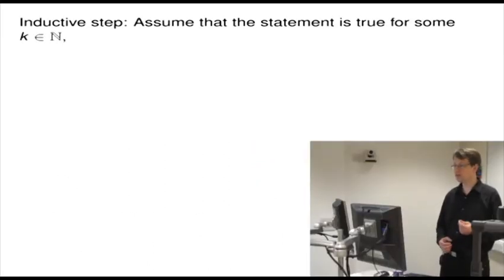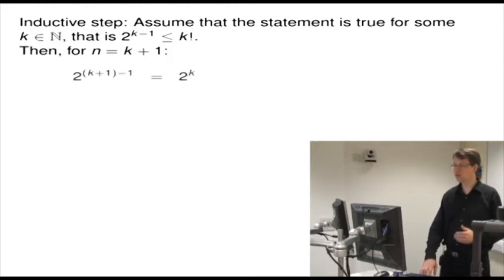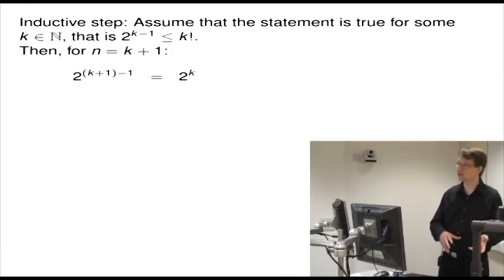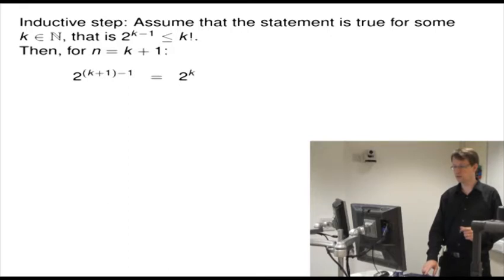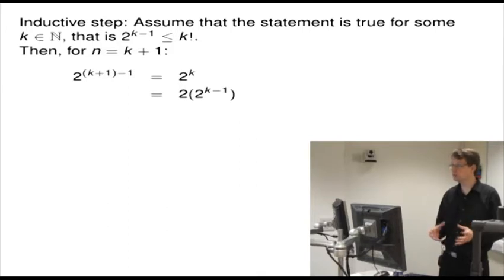Let's do the inductive step. Assume that the statement is true for some k in n — that is, 2 to the power k minus 1 is less than or equal to k factorial. Then for n equals k plus 1, we want to look at 2 to the power k plus 1 minus 1. In other words, we replace n in the inequality by k plus 1. So 2 to the power k plus 1 minus 1, that's equal to 2k. That's equal to 2 times 2 to the power k minus 1. Now I've got it in terms of something which I've assumed already — my inductive hypothesis.